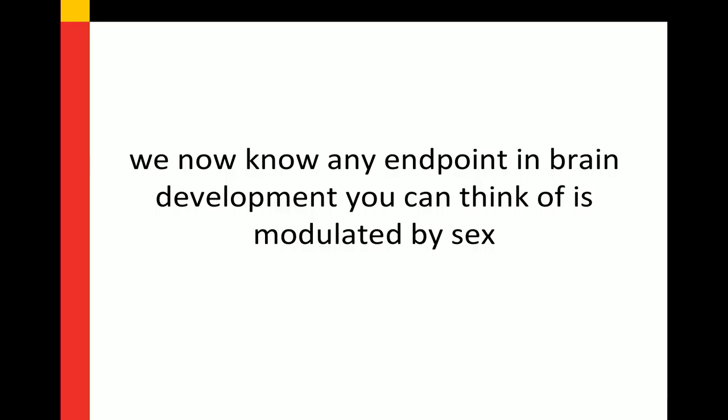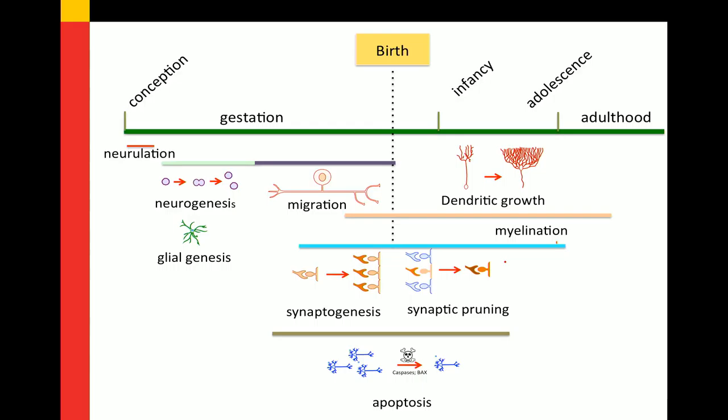It used to be that we only thought of sex differences in the context of reproduction, but we now know that just about any endpoint you can mention in the brain during development is at some time, in some way, going to be modulated by the sex of the animal. Starting with neurulation, as early as primary embryogenesis there are sex differences in epigenetic removal of marks and in folding of the neural tube. Neurogenesis, gliogenesis, migration, dendritic growth, myelination, synaptogenesis, synaptic pruning, apoptosis — every one of these endpoints varies between males and females in some part of the brain at some time. There are also whole swaths of the brain that are not different in males and females, and our challenge is to figure out where the sex differences are, when and how they occur, and what they mean.